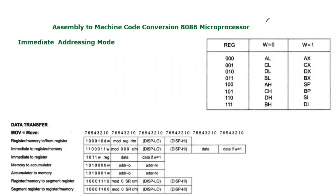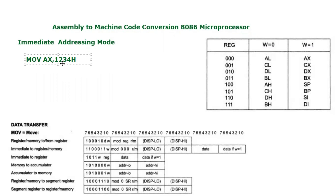Bismillahirrahmanirrahim, assalamu alaikum everyone. In this video tutorial I'm going to discuss another assembly to machine code conversion. There was a question posted on my channel asking how we can convert MOV AX, 1234h. The video I already posted on my channel is about register addressing modes, so this instruction is specifically targeting immediate addressing mode.